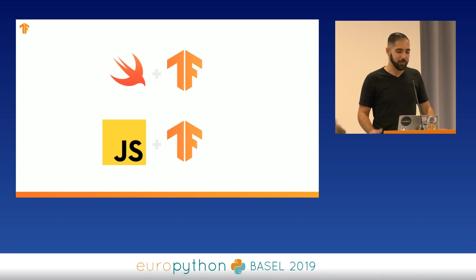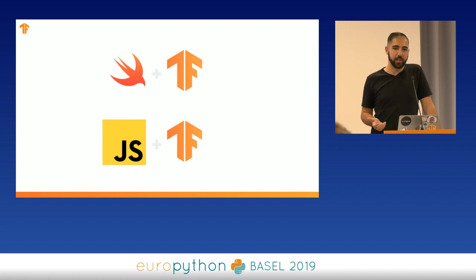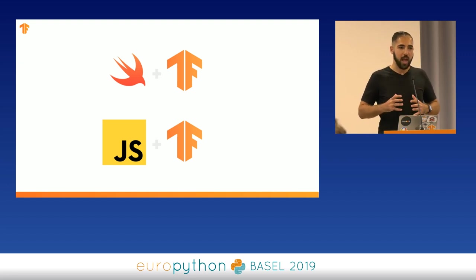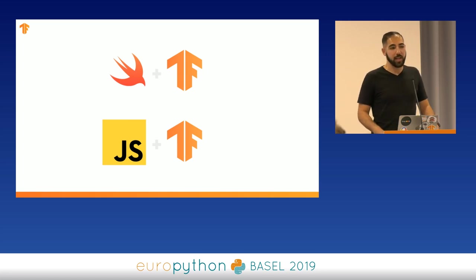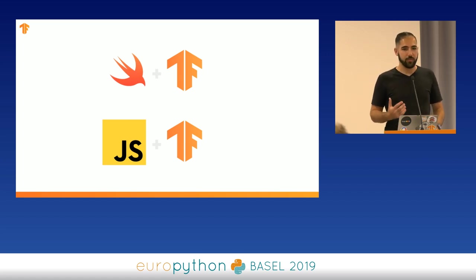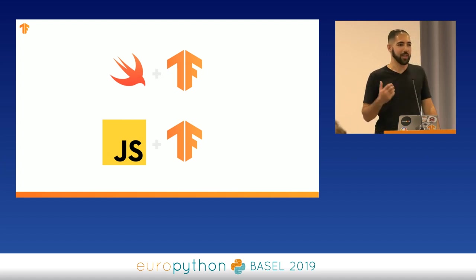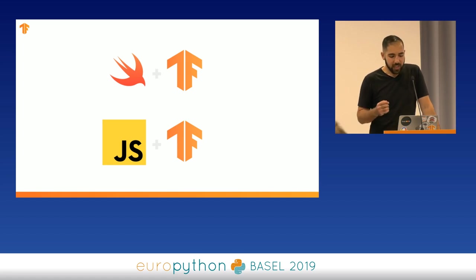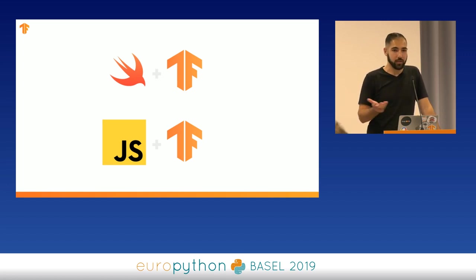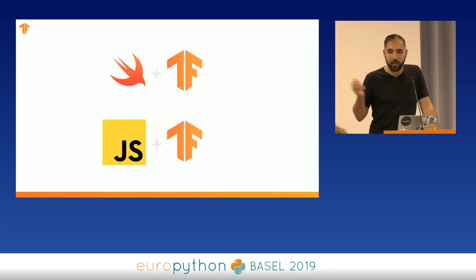Lastly, two extra projects in the TensorFlow community: Swift for TensorFlow and TensorFlow.js. Swift for TensorFlow is a movement to use Swift to develop machine learning models — Swift has become increasingly popular in the data science community for addressing some of Python's shortcomings. TensorFlow.js lets you run machine learning models using JavaScript in the browser, or on servers using Node, working with both regular JavaScript and Node.